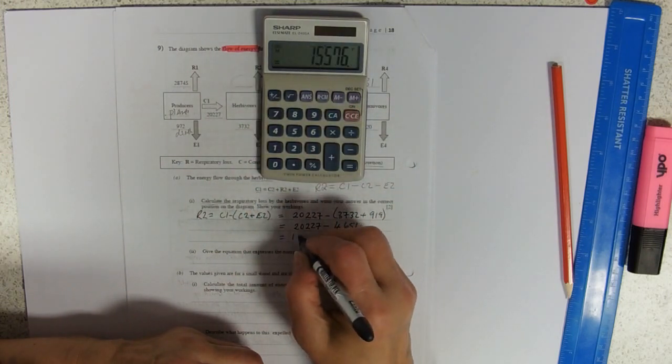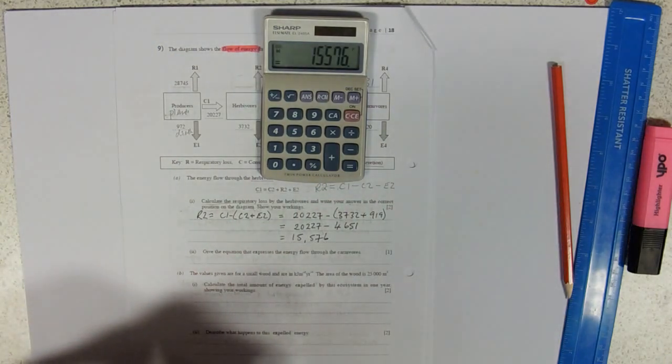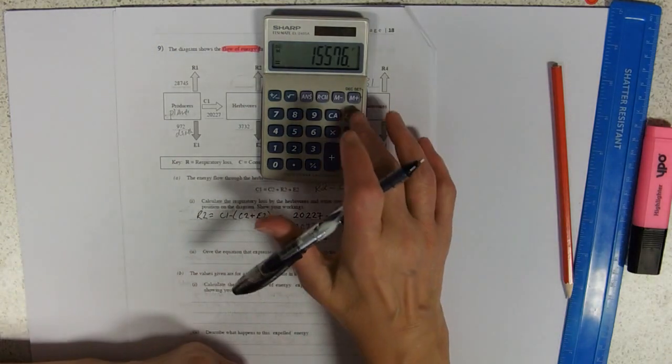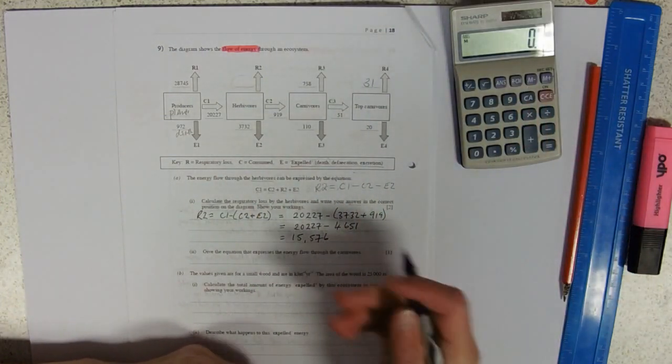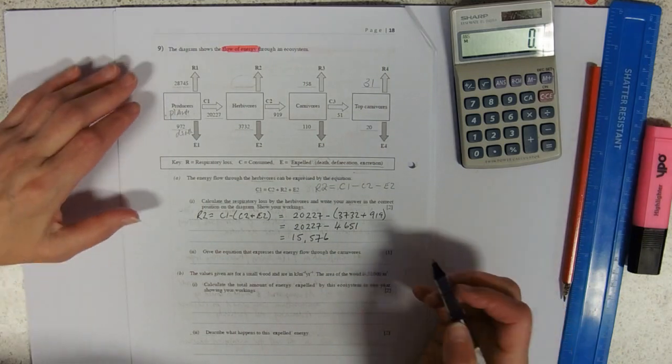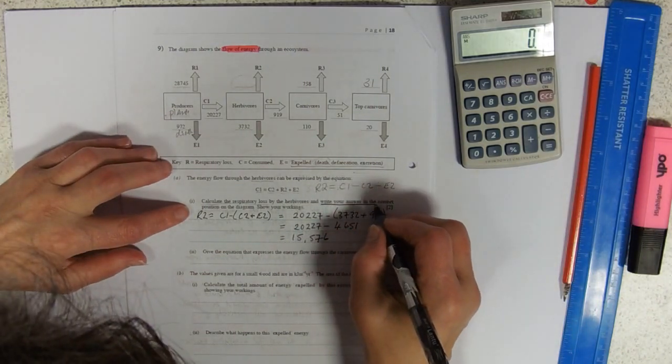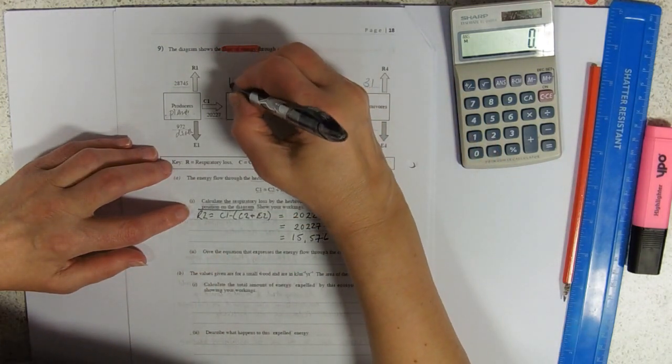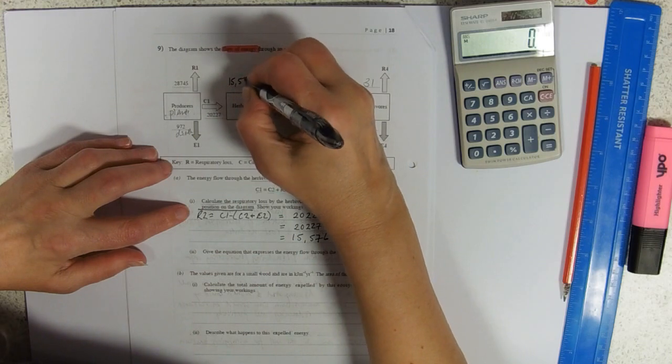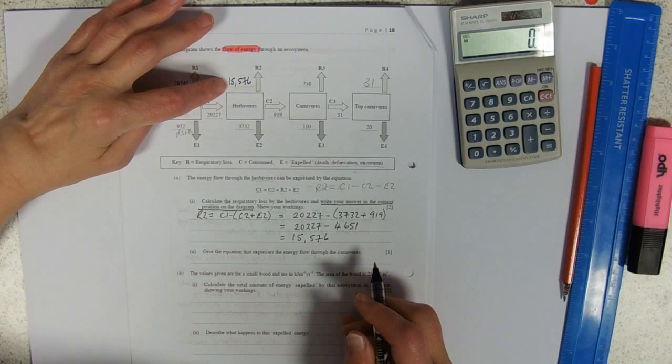So that equals 15,576. Units? Don't have any units, so I don't need to put any on. And it tells me to write my answer in the correct position on the diagram.